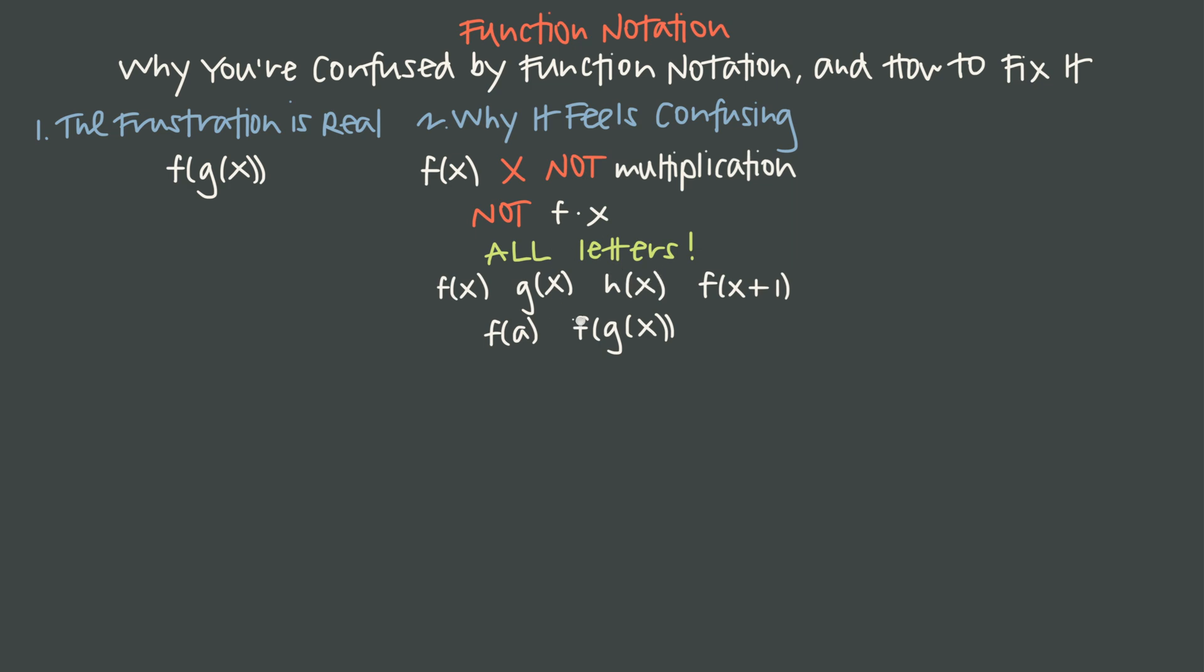The other problem is that it's all letters. We see f of x, g of x, h of x. Sometimes we see things like f of x plus 1 or f of a or this composite f of g of x. And it feels like it's all letters, no numbers, and it's really abstract. Sometimes it just feels like a mess and there's no clarity involved at all. But here's the truth.